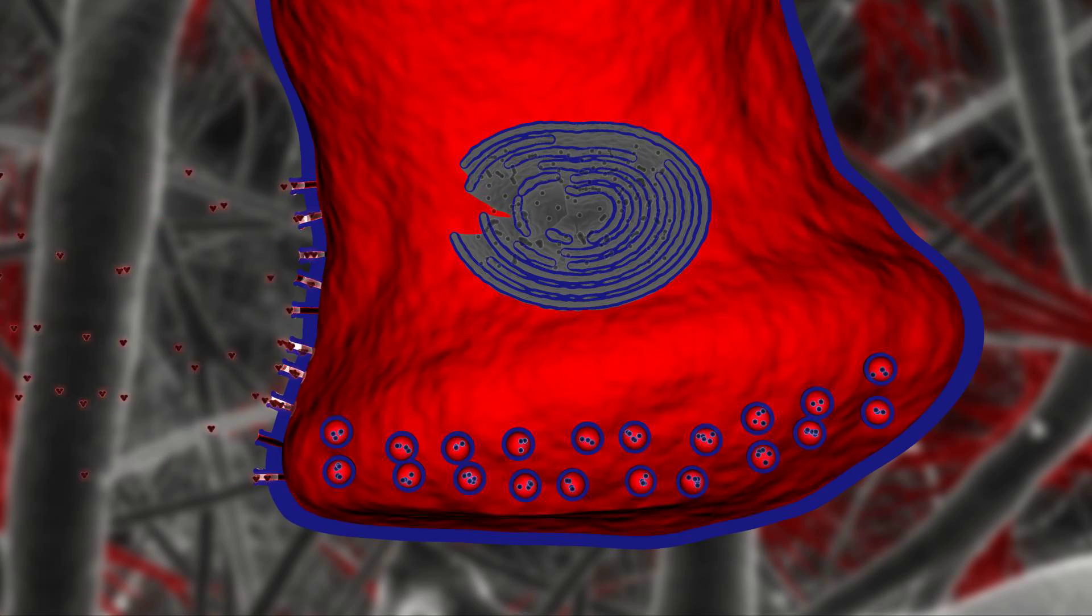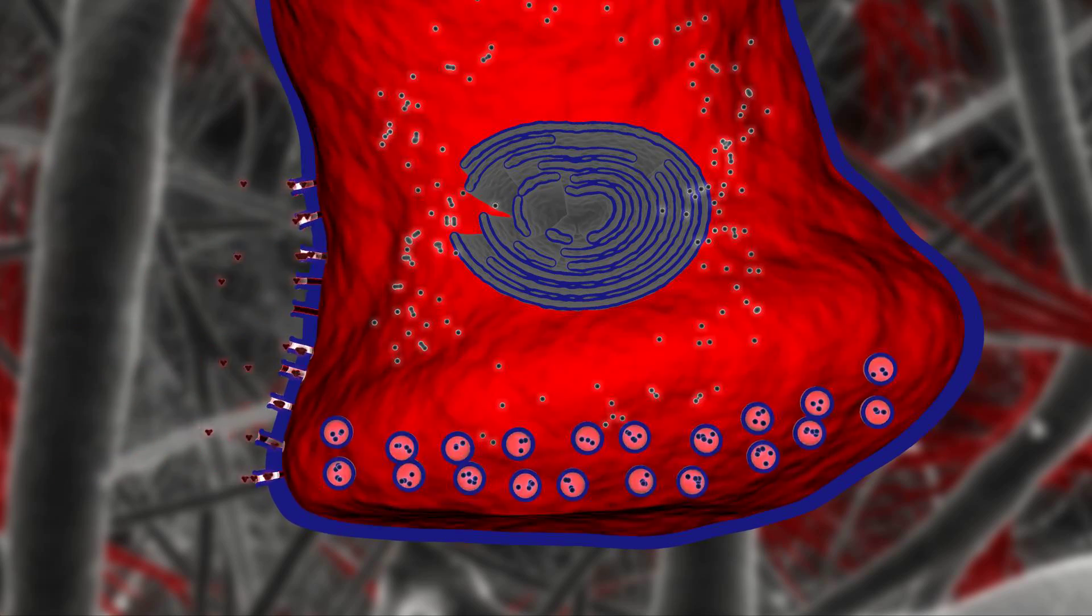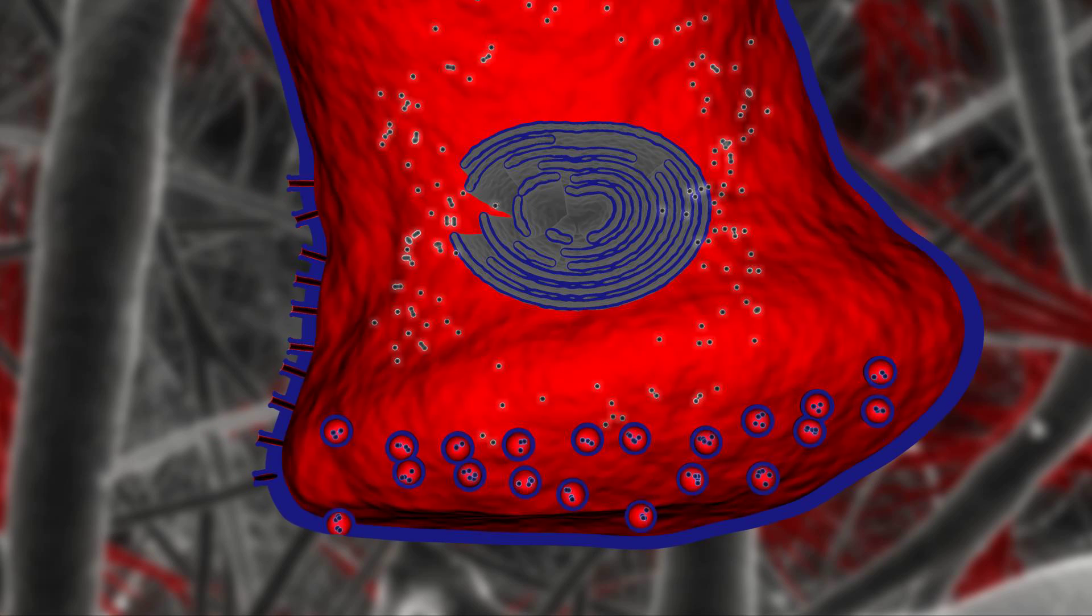In spite of undergoing faster release upon stimulation, glutamatergic vesicles are released slowly because they are not docked to the cell membrane.